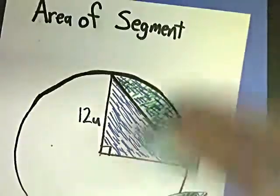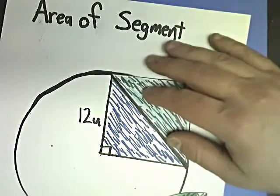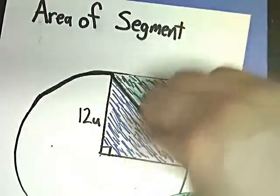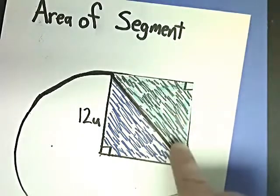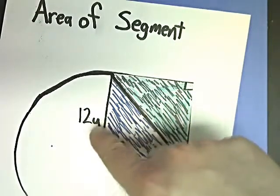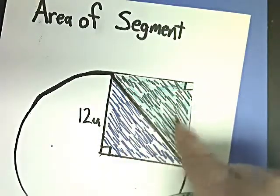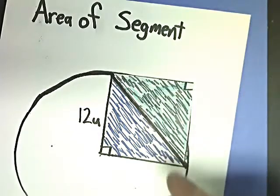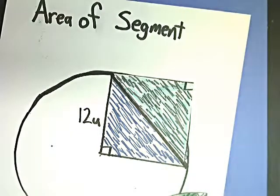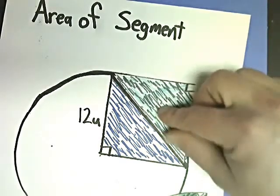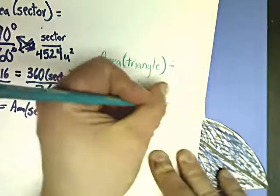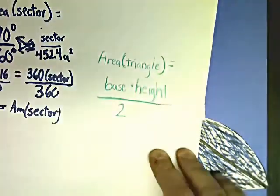The reason it's base times height is because we broke this up into parts — we would have that many squares inside. So if this was a 12 by 12, I would cut this into 12 parts, and if I have 12 columns and 12 rows, that's 144 distinct one-by-one unit squares inside. But one of these triangles only represents half of that, so I need to do base times height divided by 2.